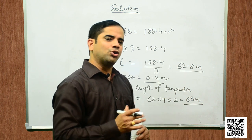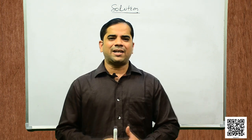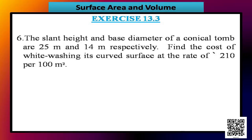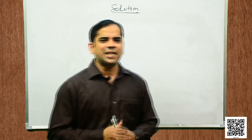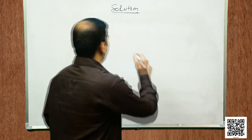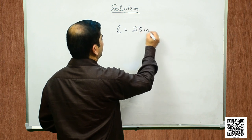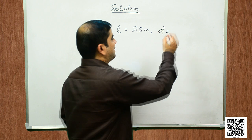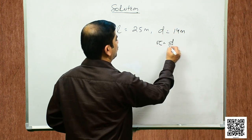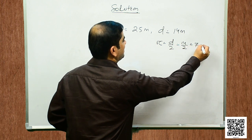Hope you clearly understand the solution for question number 5. Let us now solve question number 6. It says: the slant height and base diameter of a conical tomb are 25 meters and 14 meters respectively. Find the cost of whitewashing its curved surface at the rate of rupees 210 per 100 square meters. As per the given data, l is equal to 25 meters and d is equal to 14 meters, so r = d/2 = 14/2 = 7 meters.